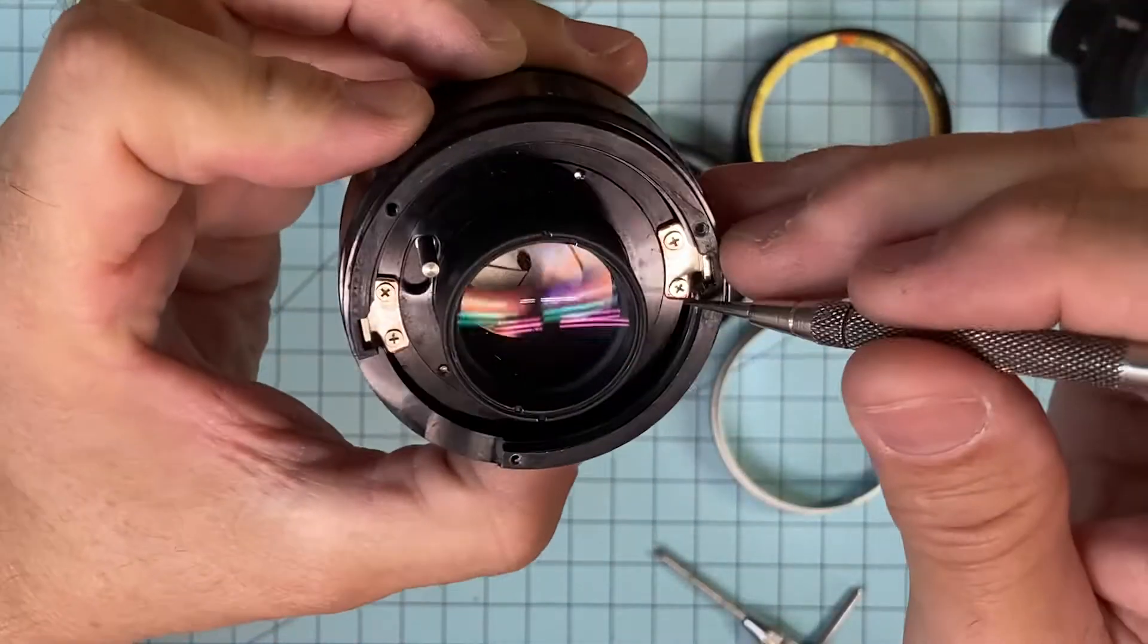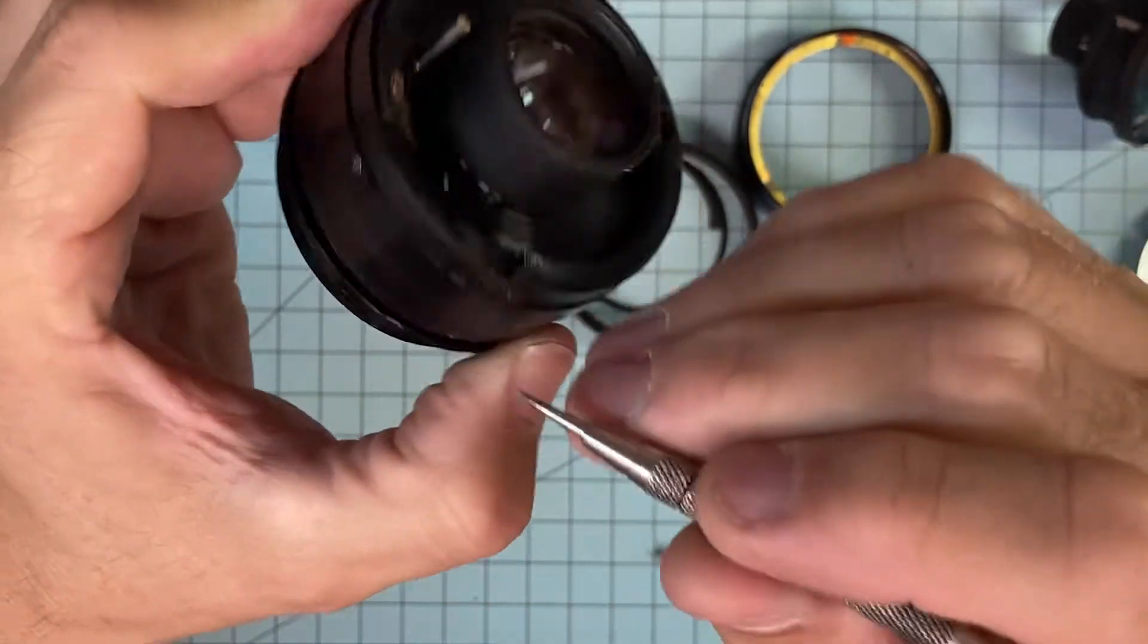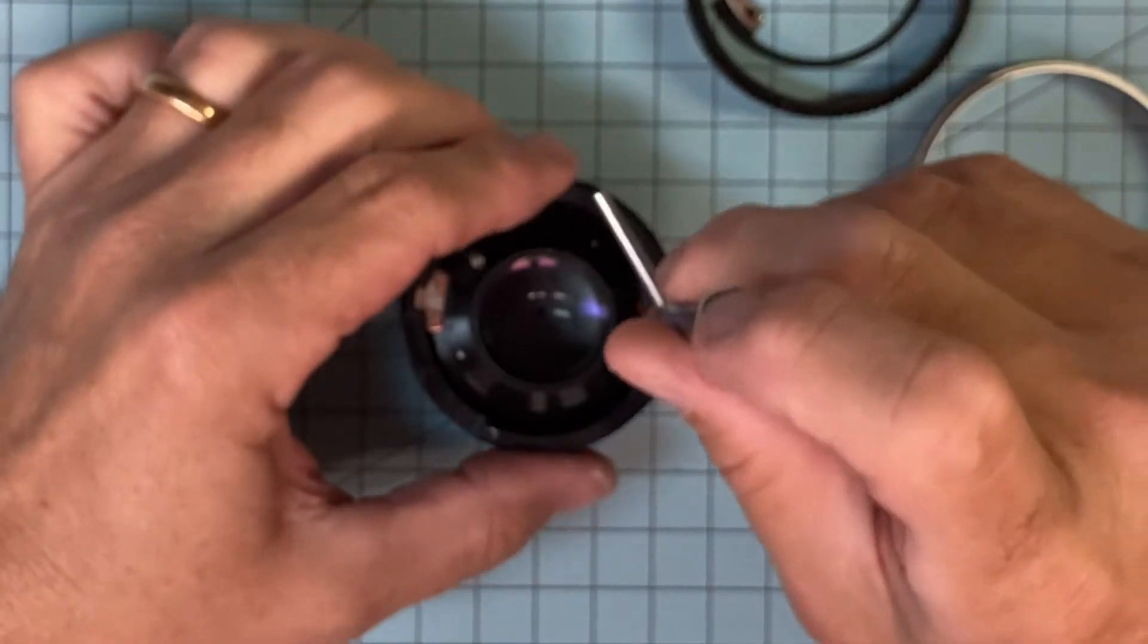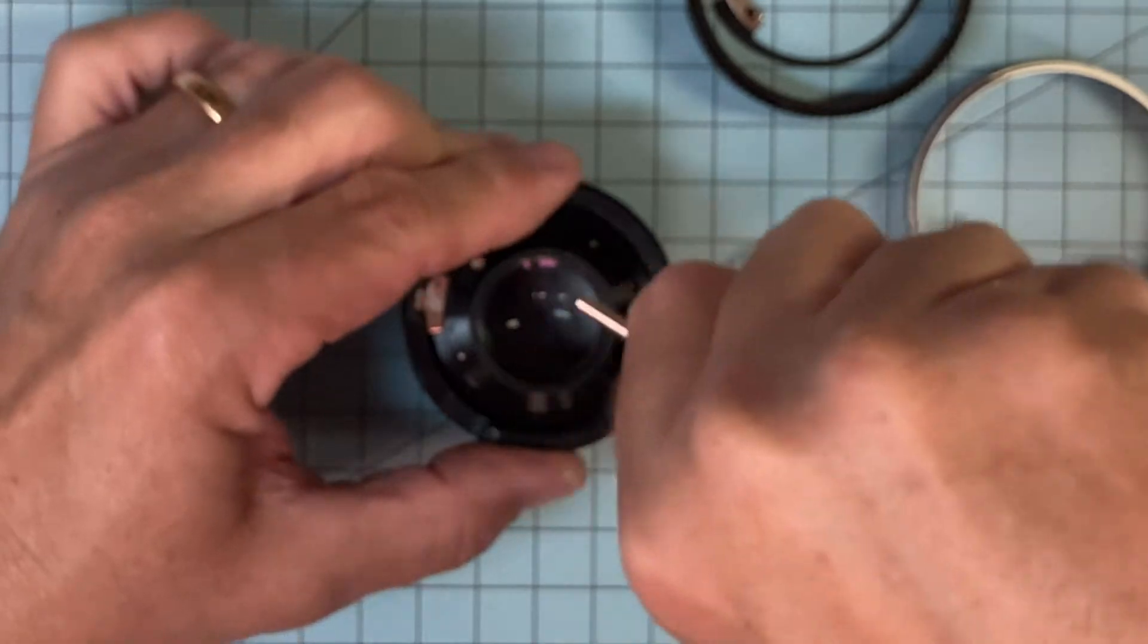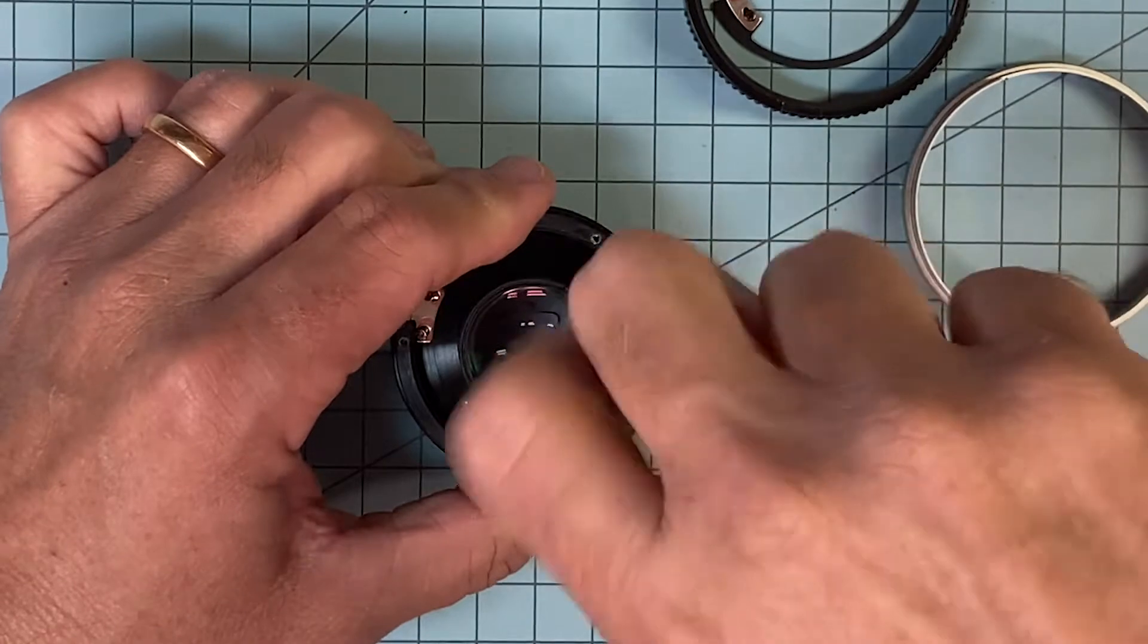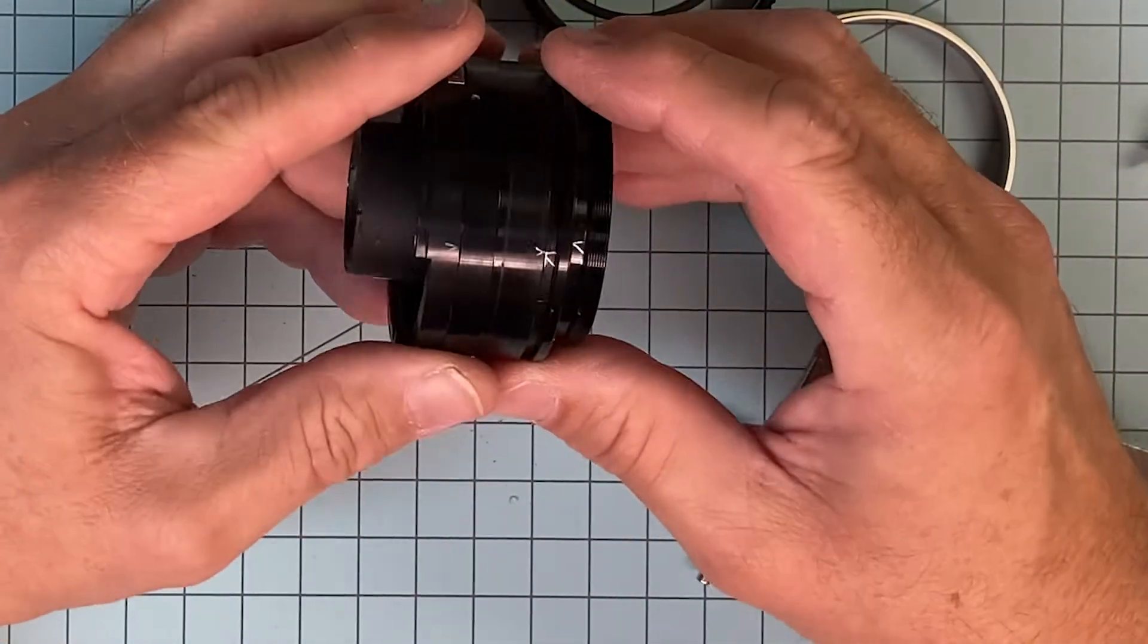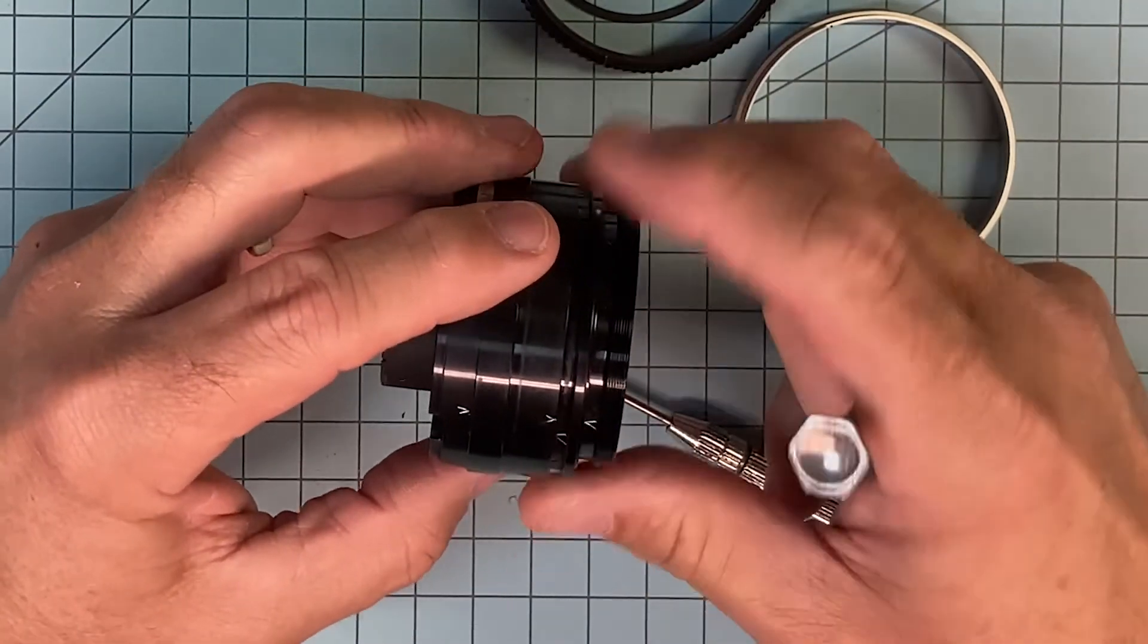These are focus keys. These focus keys now come out, and once you have these marks here, there's no way you can get these in incorrectly. I'm going to take these out. These are glued in pretty good, but the red glue is not too bad to break. Make sure your screwdrivers are quality screwdrivers.